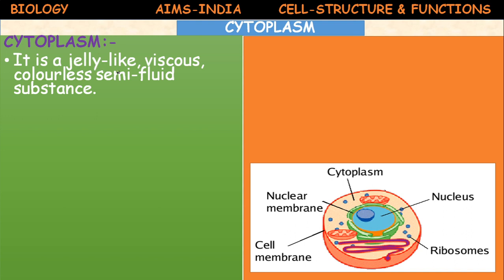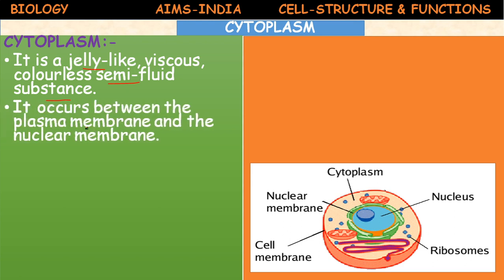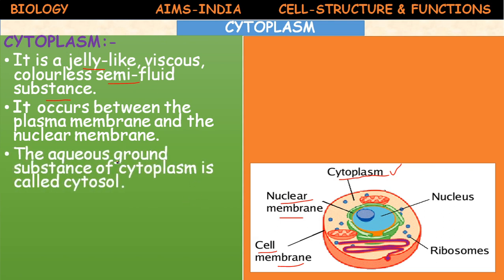Cytoplasm is a jelly-like, viscous, colorless, semi-fluid substance. It occurs between the plasma membrane and nuclear membrane. The gap between the nuclear membrane and cell membrane is filled with cytoplasm. The aqueous ground substance of cytoplasm is called cytosol — cytosol means the fluid part, which contains more water.